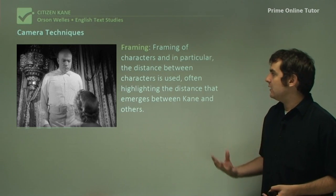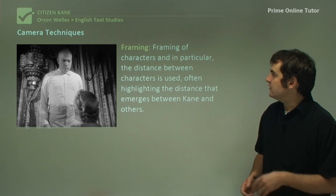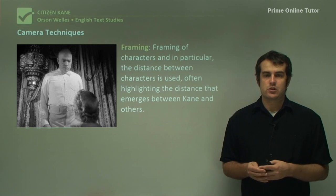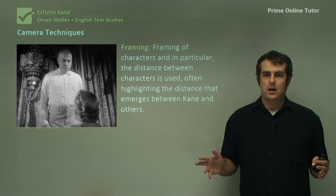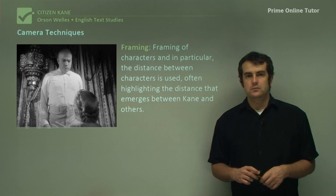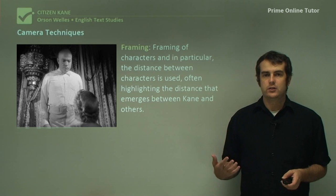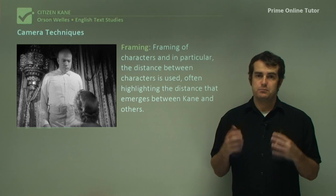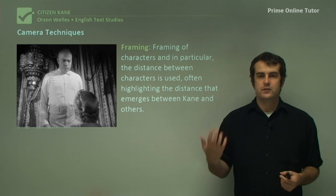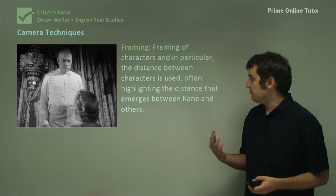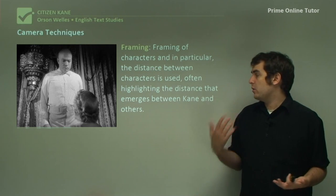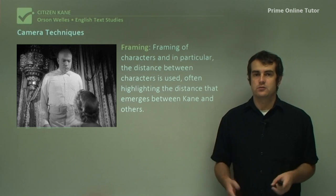We also get quite a bit of character framing, where the distance between characters is often used. The way these camera shots are framed shows the intimacy of the characters and helps characterization grow beyond what the acting alone conveys. When looking at what Citizen Kane offers as a film about character, a lot of it has to do with the way the camera and shots are framed.